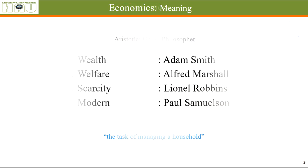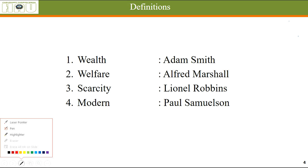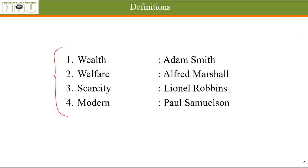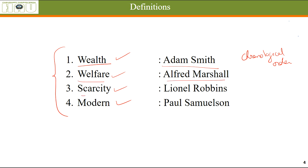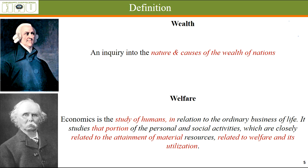There are four popular definitions of economics in descending chronological order: the wealth definition came first, then the welfare definition, then the scarcity definition, and then the modern definition. The wealth definition was given by Adam Smith, the welfare definition by Alfred Marshall, the scarcity definition by Lionel Robbins, and the modern definition by Paul A. Samuelson.